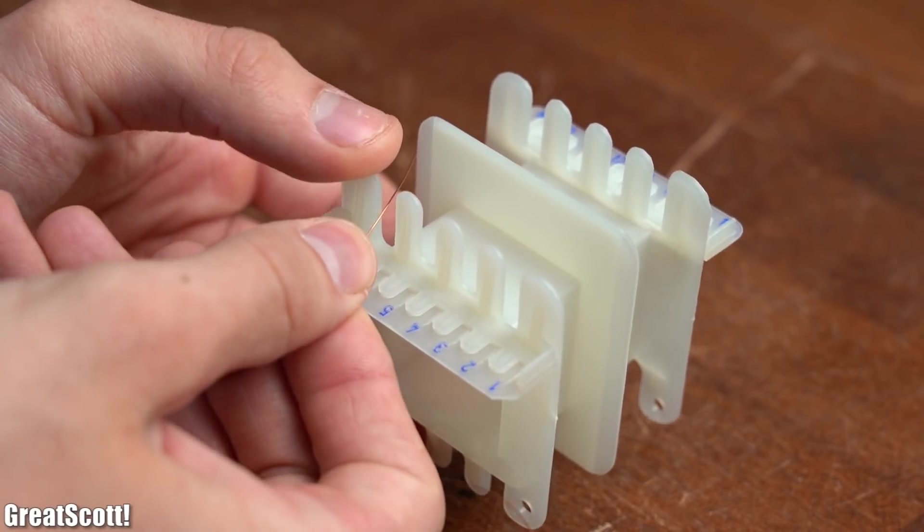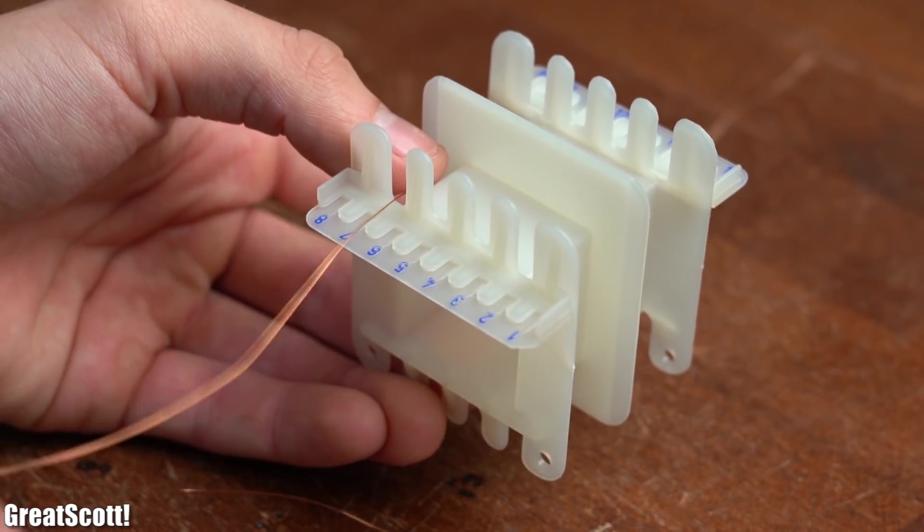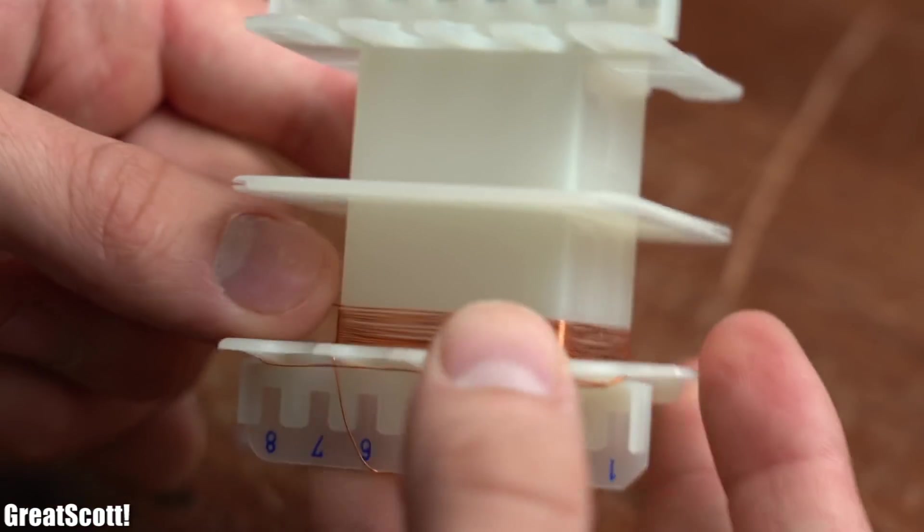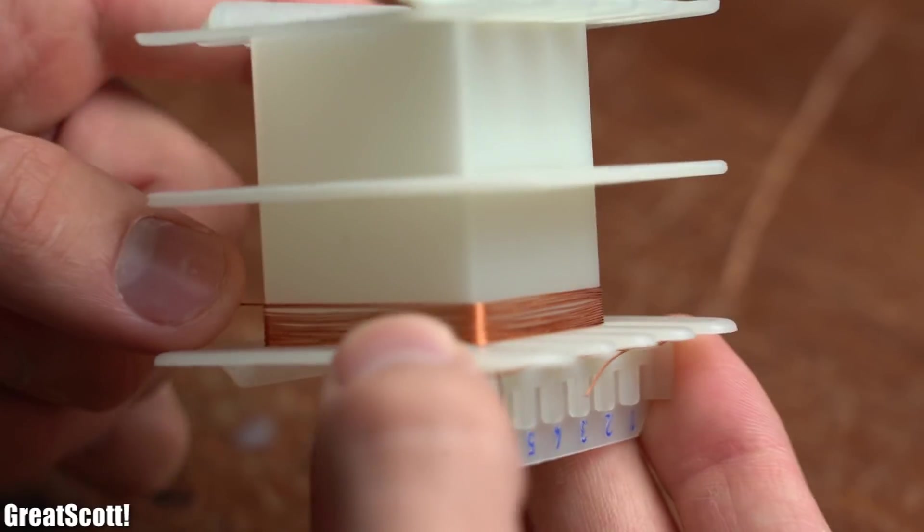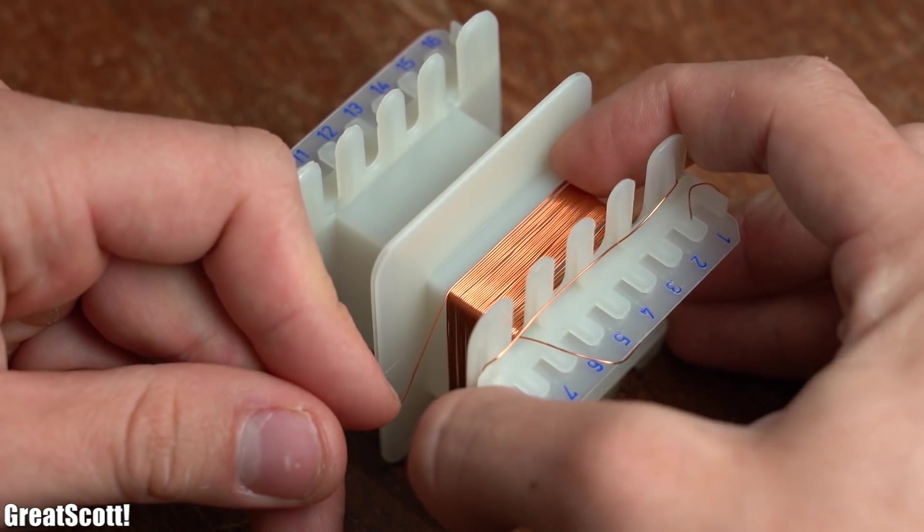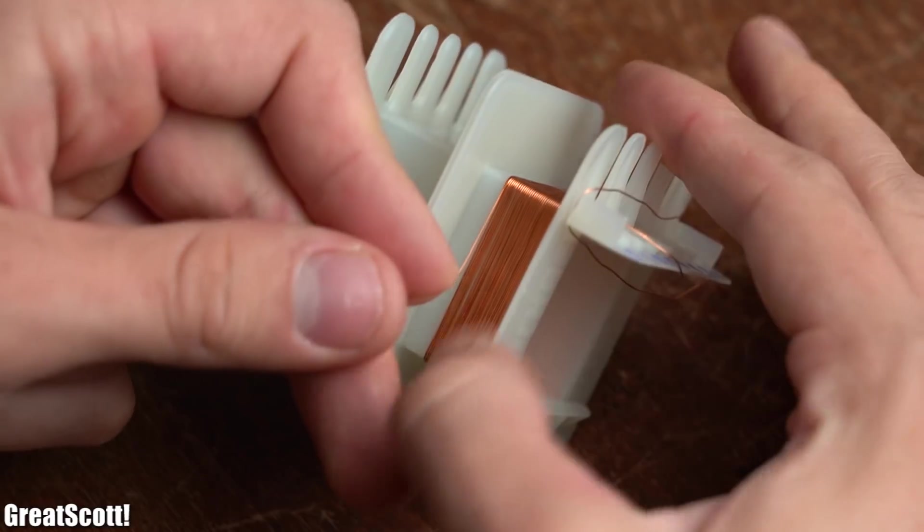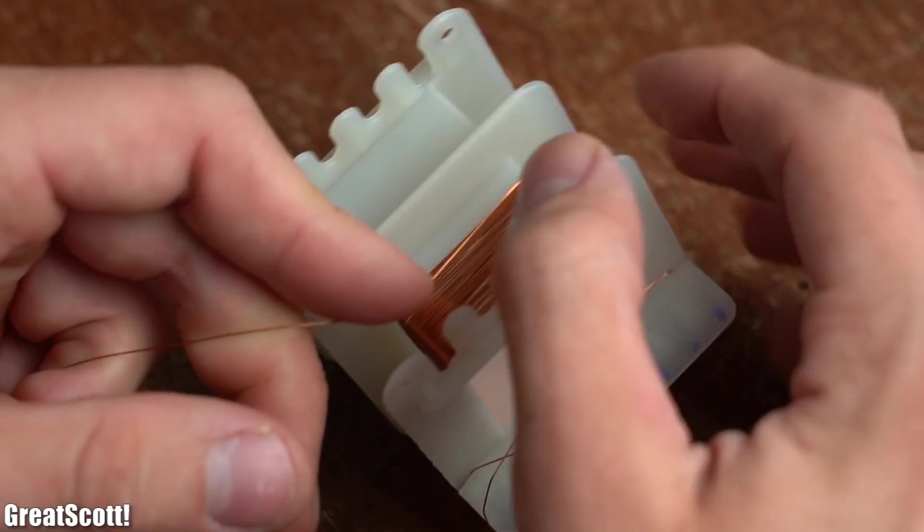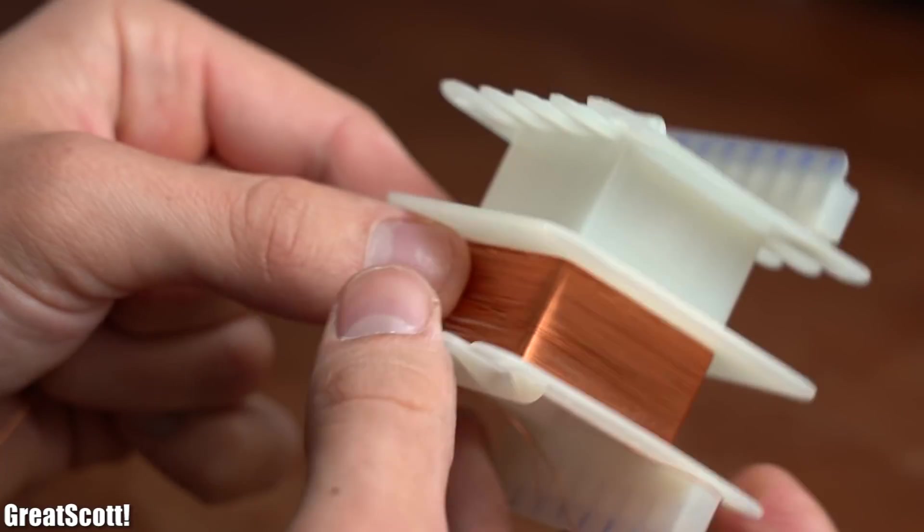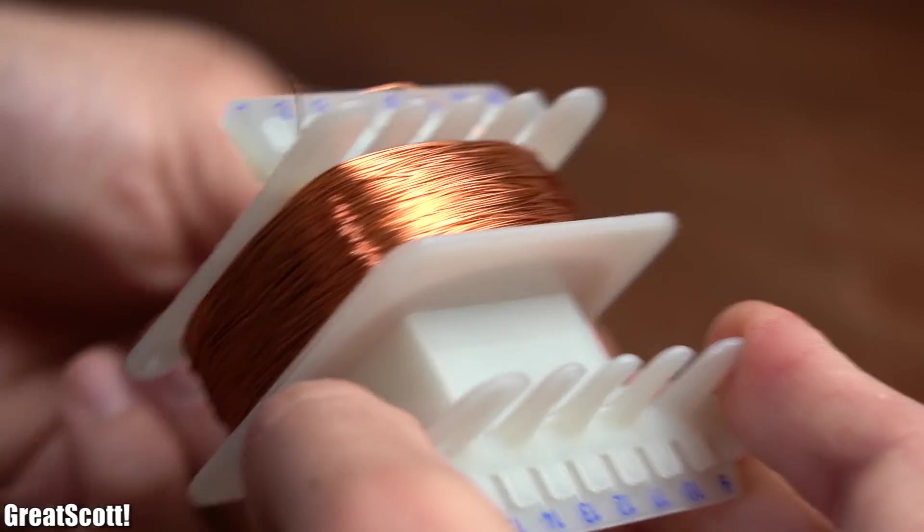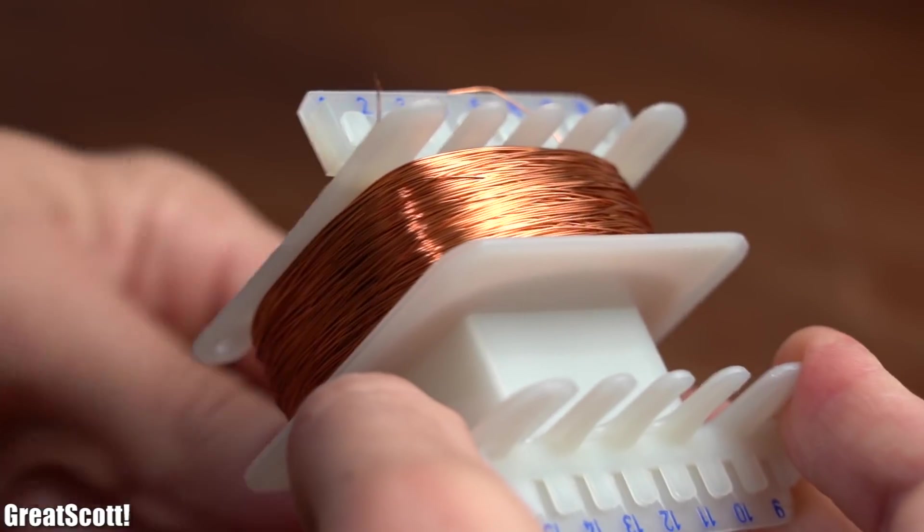But nevertheless I started the transformer build by inserting the primary wire into its chamber and winding it around the former in a clockwise manner. Now for the first 100 windings or so I truly paid attention that the windings are exactly next to one another and tight around the former. But as time went on I got more and more careless with the windings, which luckily though did work out just fine in the end.